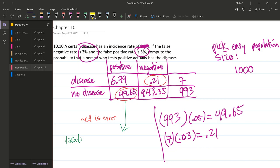And for this other one down here, just do subtraction on the calculator. 993 minus 49.65 gives us 943.35. And again, if I add up the bottom row right here, those two need to add up to 993.